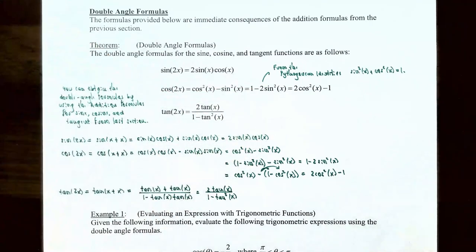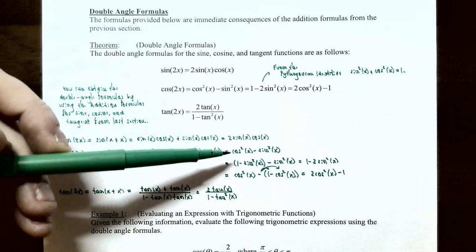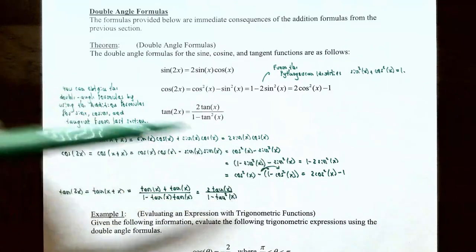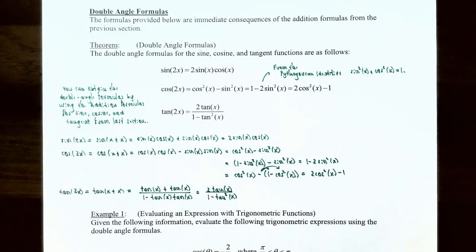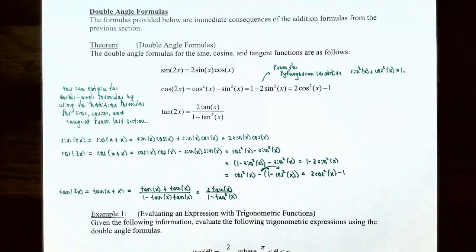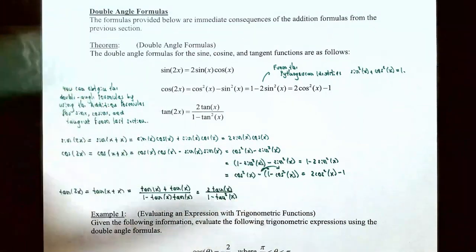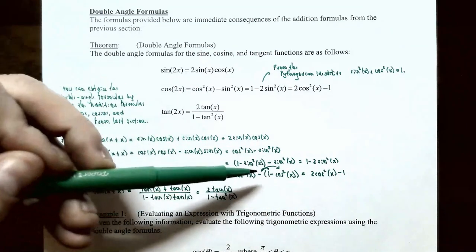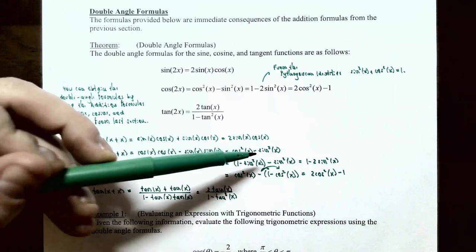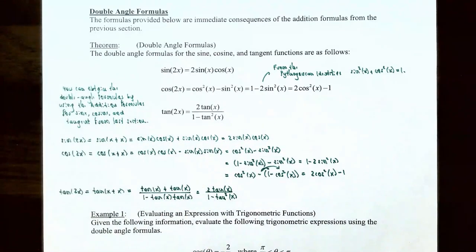The other two forms use the Pythagorean identity sine squared x plus cosine squared x equals 1. Replacing cosine squared x with 1 minus sine squared x gives 1 minus 2 sine squared x. Alternatively, replacing sine squared x with 1 minus cosine squared x gives 2 cosine squared x minus 1. So cosine of 2x equals cosine squared x minus sine squared x, or 1 minus 2 sine squared x, or 2 cosine squared x minus 1.